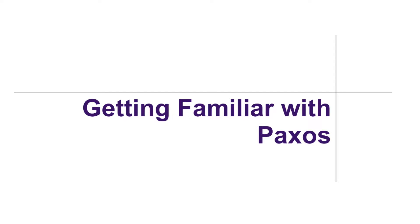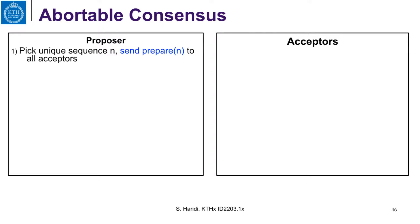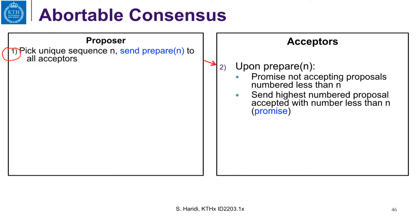We will give some examples to make you familiar with the Paxos algorithm. Let us look again at the algorithm — this is the minimal algorithm. You pick any sequence number and send a prepare. The acceptors get a number n, and that number creates a promise from the acceptor not to accept any number less than n. The acceptor then sends back the highest-numbered proposal it has accepted that is less than n, and that is a promise.